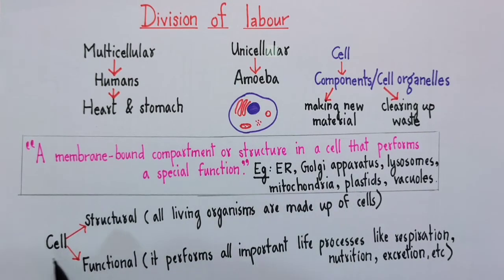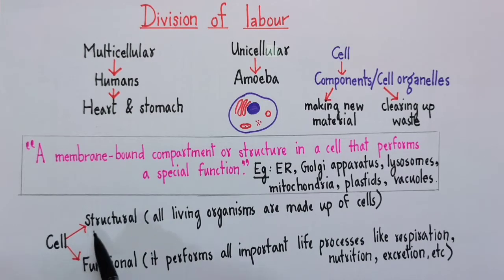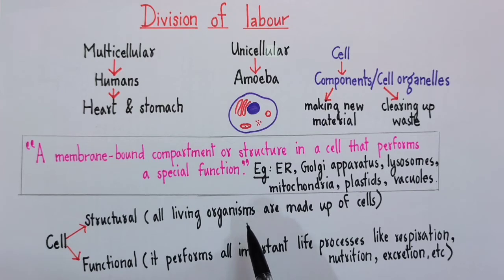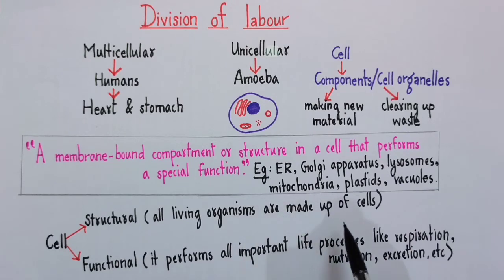Now before we wind up, let us quickly discuss why the cell is called the structural and functional unit of life. It is called a structural unit of life because the body of all living organisms, irrespective of their size — whether they are microscopic or macroscopic — is made up of cells.